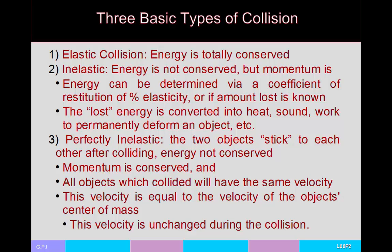The perfectly inelastic collision is arguably the easiest to solve, because after the collision the two objects are stuck to each other — they're going to have the same velocity. The velocity these two objects have is equal to whatever the center of mass velocity was before the collision. The center of mass velocity doesn't change.